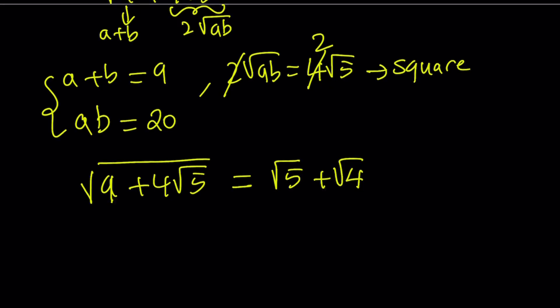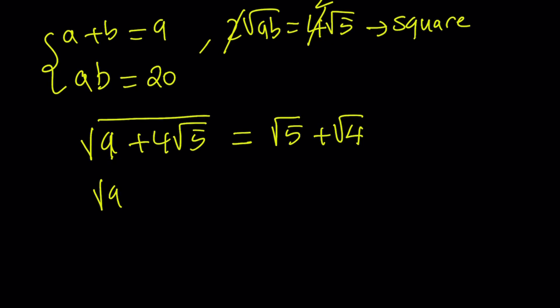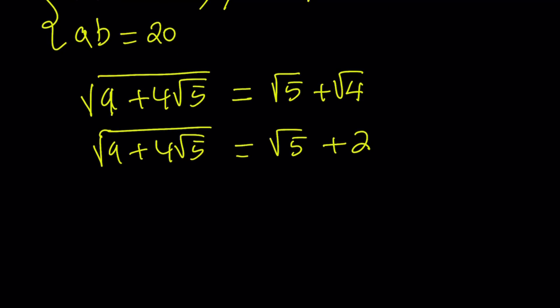But square root of 4 is equal to 2. Therefore, we can write the square root of 9 plus 4 root 5 as square root of 5 plus 2. And if you square the expression on the right-hand side, you're going to get the expression inside the radical on the left-hand side. Now, let's go ahead and plug it in.